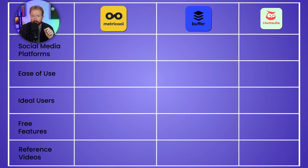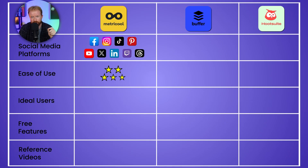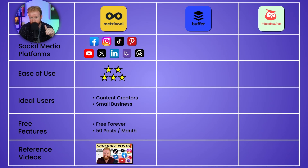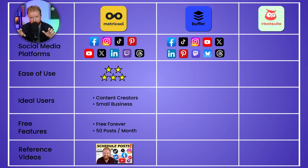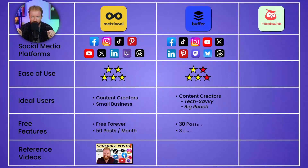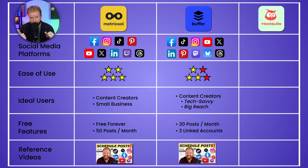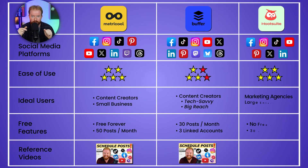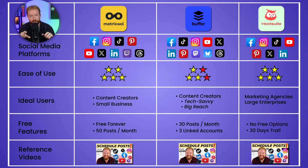Let's recap. Metricool is your free option — easy to use, best for content creators and small businesses, and the free version is plenty good enough. I've personally been using Metricool's free version for two years. Buffer's advantage is the largest reach across social media platforms. It's best for tech-savvy content creators trying to maximize their reach across every platform, including Mastodon and Threads. Hootsuite is the most user-friendly and probably the best tool overall, but at $100 a month it's best for mid-sized to large businesses and marketing agencies because it can really optimize your workflow.